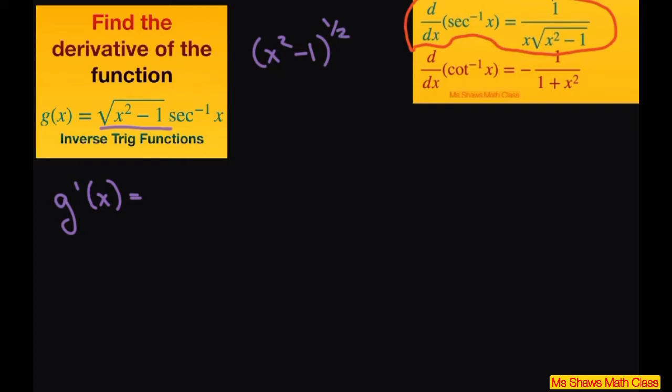When you differentiate this, we're going to copy down square root of x squared minus 1 times 1 divided by x times the square root of x squared minus 1.